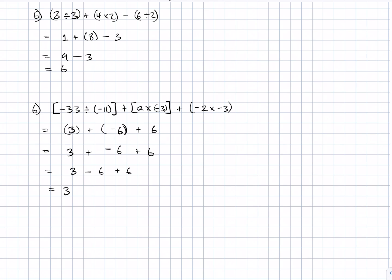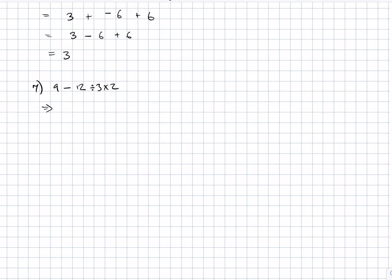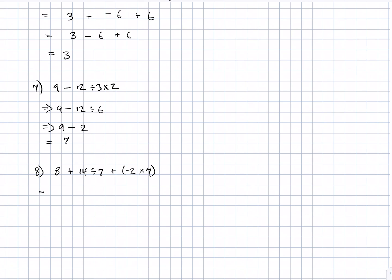Example 7: 9 − 12 ÷ 3 × 2. Following the order of operations, we do multiplication first: 12 ÷ 3 × 2 becomes 9 − 12 ÷ 6. Then division: 12 ÷ 6 is 2. So the expression reads 9 − 2, which equals 7. Example 8: 8 + 14 ÷ 7 + (−2 × 7). This gives us 8 + 2 − 14, which equals 10 + (−14), which equals 10 − 14, giving a final answer of negative 4.